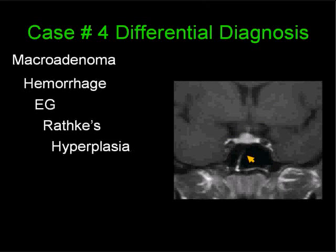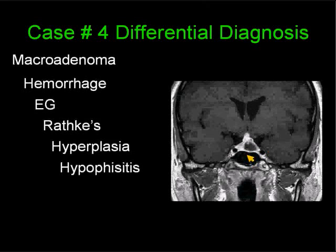Hyperplasia of the pituitary gland occurs physiologically in the first three months of life, before adolescence, before the menstrual period, before or immediately after a woman gives birth, and in patients who are hypothyroid. Hypophysitis is nonspecific; patients present with acute hypopituitarism, and some cases tend to present in the early postpartum period — which may be a clue for lymphocytic hypophysitis.